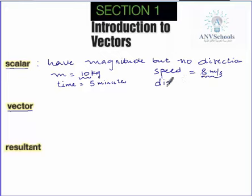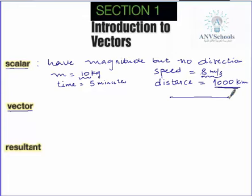Distance is also scalar. If I say the distance from Jiddah to Rad is one thousand kilometers, it simply tells us the path length between those two cities — it doesn't tell us the direction. We don't care about direction; what we need is the length or path length between these two places.